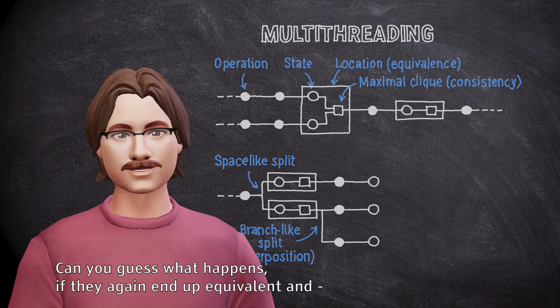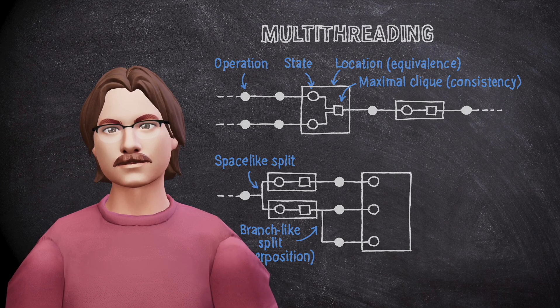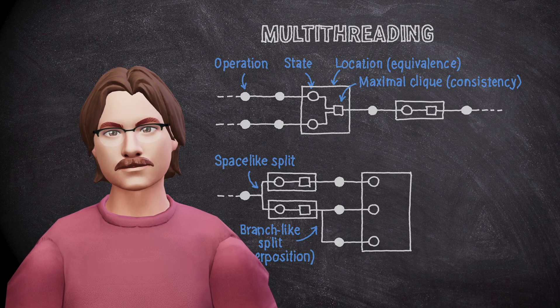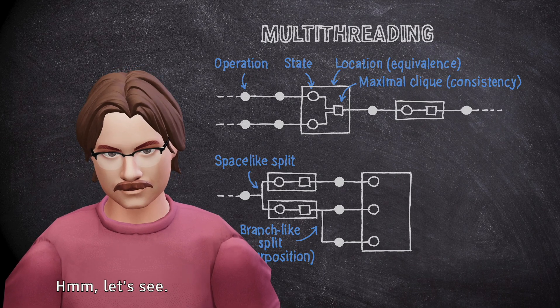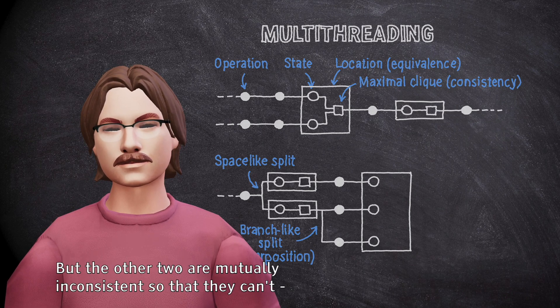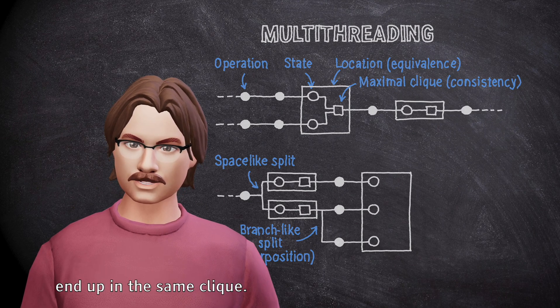Can you guess what happens if they again end up equivalent and in the same spacetime location? Let's see. We know that our first thread is consistent with the other two. But the other two are mutually inconsistent so that they can't end up in the same clique.